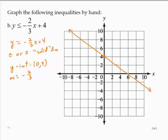Testing a point. I'll test 0, 0 again. Is 0 less than or equal to negative 2/3 of 0 plus 4? Well, 0 is the left hand side. Negative 2/3 of 0 is 0. 0 plus 4 is 4. Is 0 less than or equal to 4? That's a true statement.